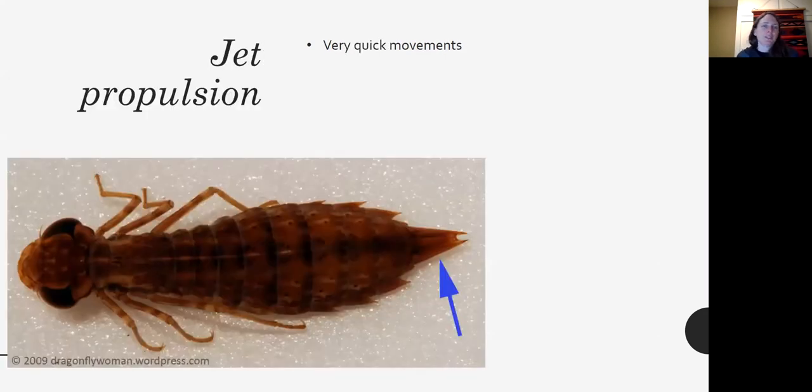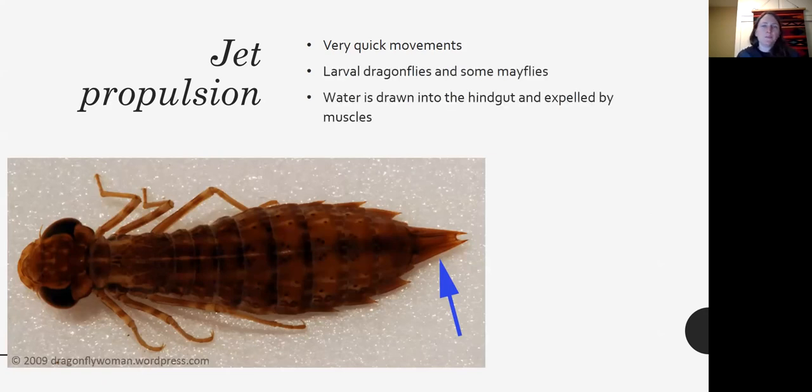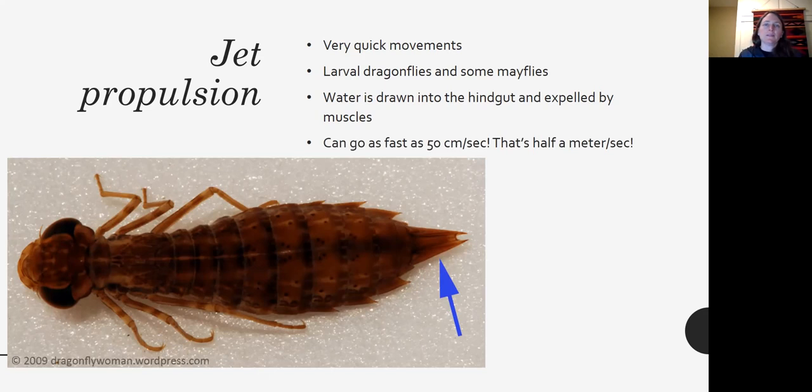And there's jet propulsion. Some organisms can propel water out of their bodies to allow for very quick movements. This dragonfly and some species of mayflies, they draw water into their hindgut. They're breathing that way. So they're pulling water in to extract dissolved oxygen. And then they can expel it out of their hindgut, out of their butt end basically, with these really strong muscles. And it allows them to go really fast in a forward direction.